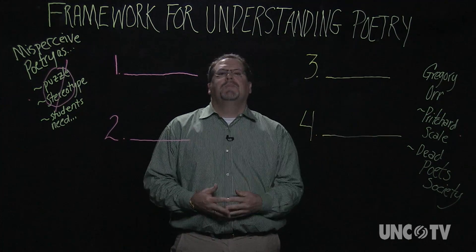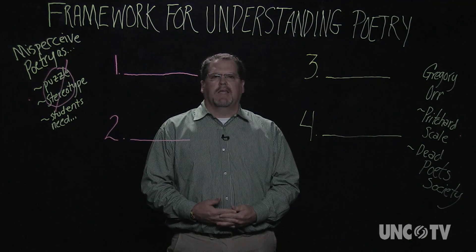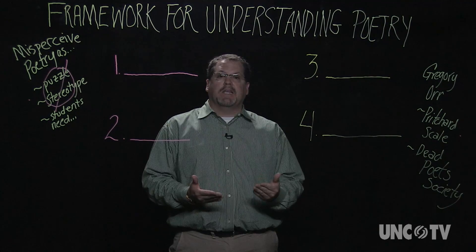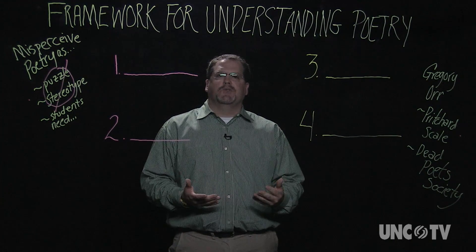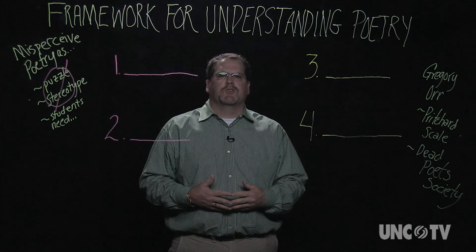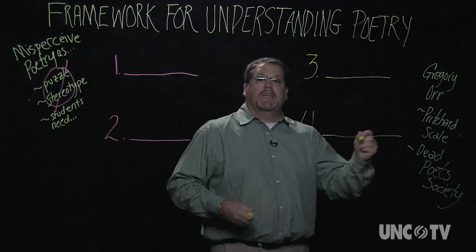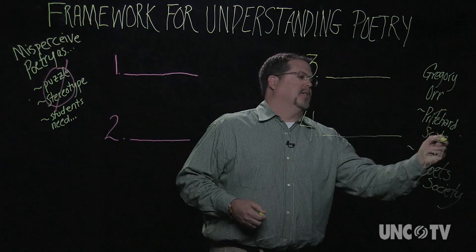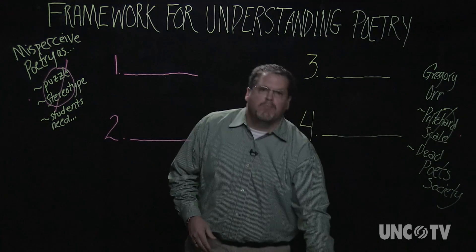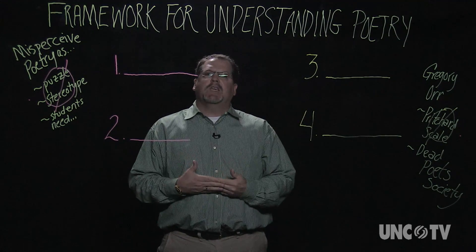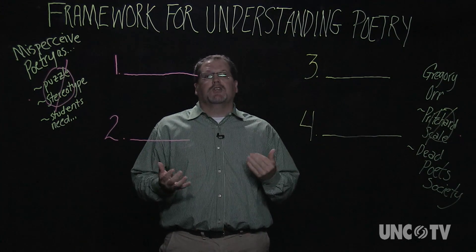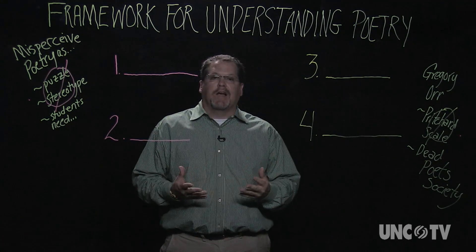This is much like the Pritchard scale in the movie Dead Poets Society, where Robin Williams plays a professor named Keating, and Keating has his students rip out the section of their textbook that focuses on the Pritchard scale. So we're going to get rid of that idea of judging or evaluating poems, but we want to keep the key ideas, because they do give us a good way to understand, discuss, and analyze poetry.